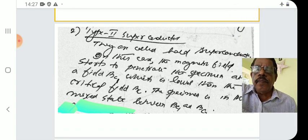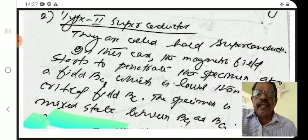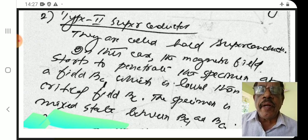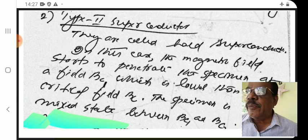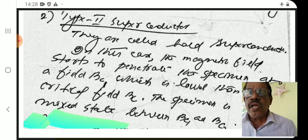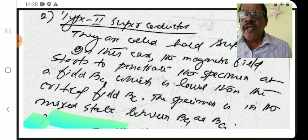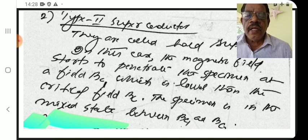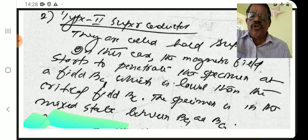Type 1 superconductors are called soft superconductors, while Type 2 superconductors are called hard superconductors. In Type 2, the magnetic field starts to penetrate the specimen at field BC1, which is lower than the critical field BC. The specimen is in a mixed state between BC1 and BC2, meaning partial superconducting and partial normal state.